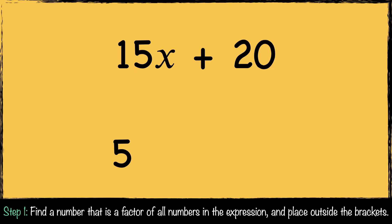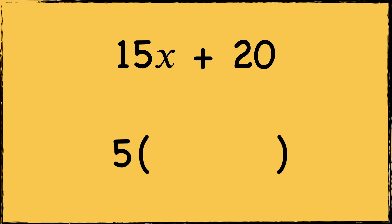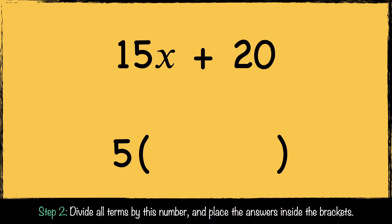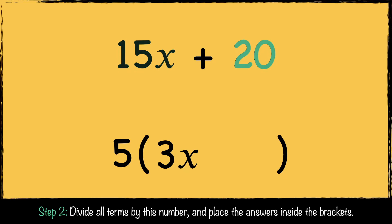So we put 5 in front of the brackets. The next step is to divide all terms by this number and place the answers inside the brackets. First we do 15x divided by 5, which is 3x. Next we divide 20 by 5, which is 4.